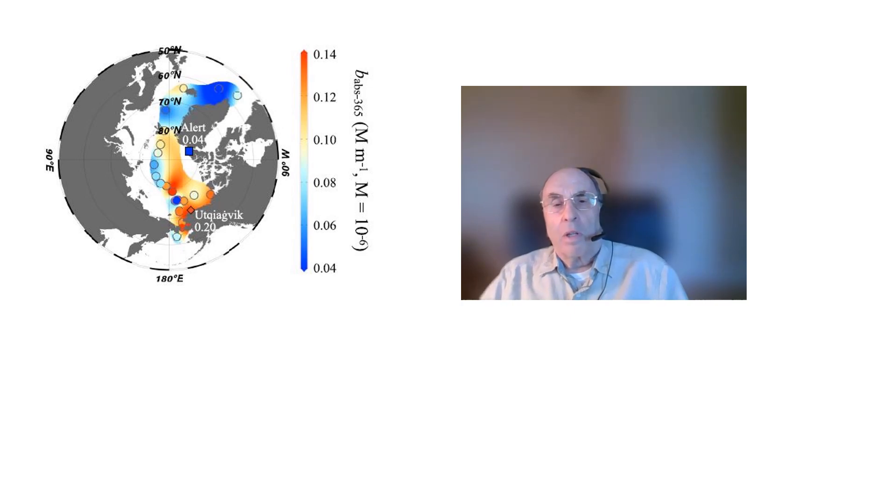The measurements are a little bit difficult to explain in detail, but basically they show that brown carbon from wildfires boosts the overall effect of light absorbing particulates on warming and ice melt in the Arctic by another 30%. This helps to explain why the Arctic is now warming about four times faster than the average for the whole Earth.